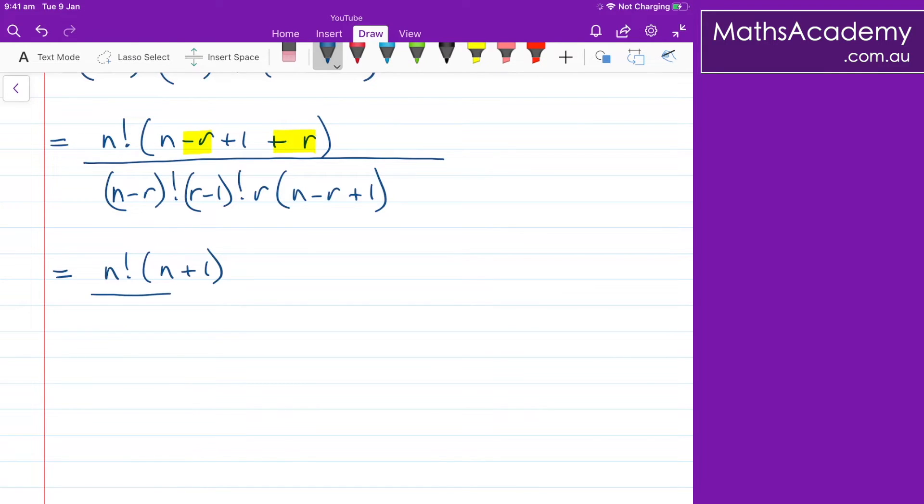In the denominator, let's see what I can simplify here. Well, if I look here, I've got the n minus r plus one and the n minus r factorial. So that will give me n minus r plus one factorial. Obviously, this term here is just one more than that term. And then looking here, I've got the r and the r minus one. Well, that is just r factorial.